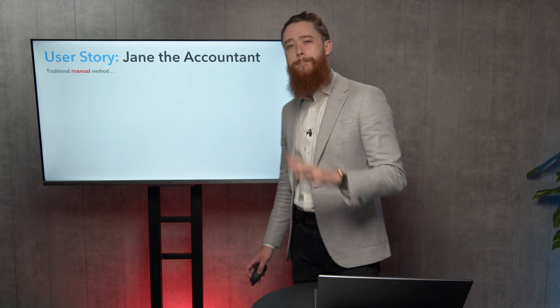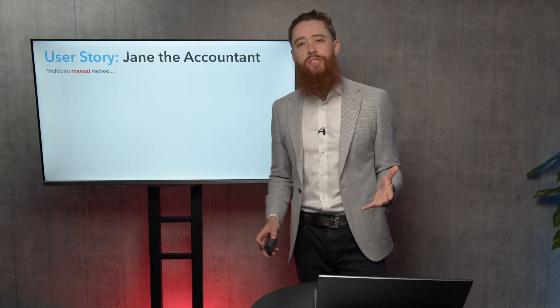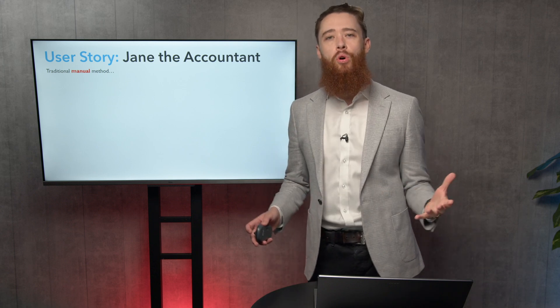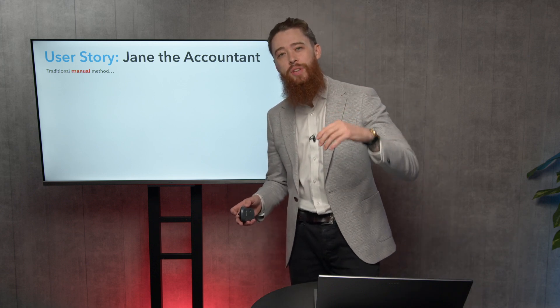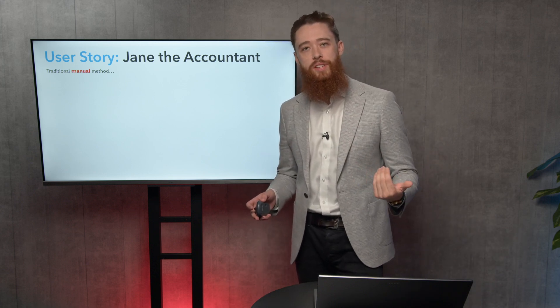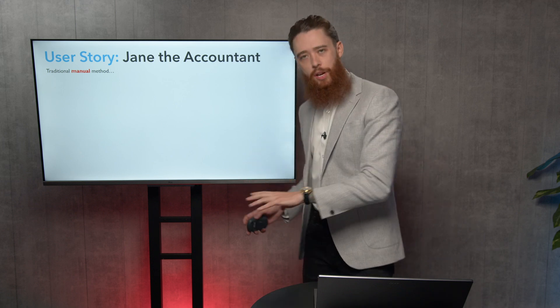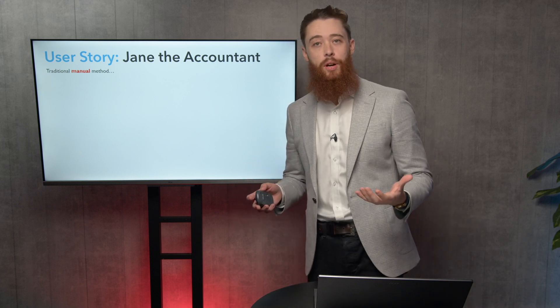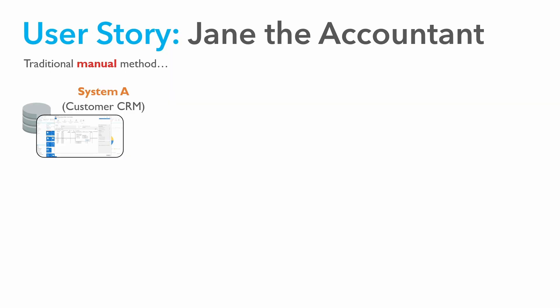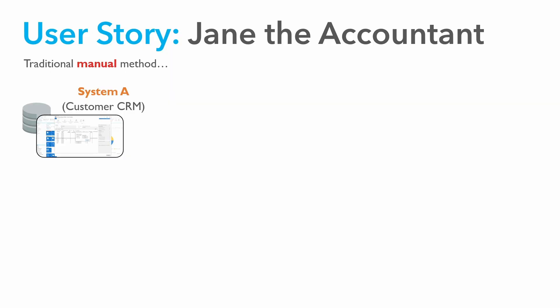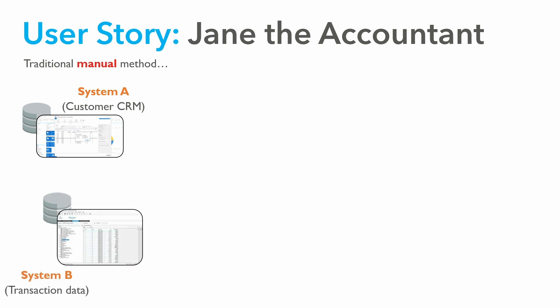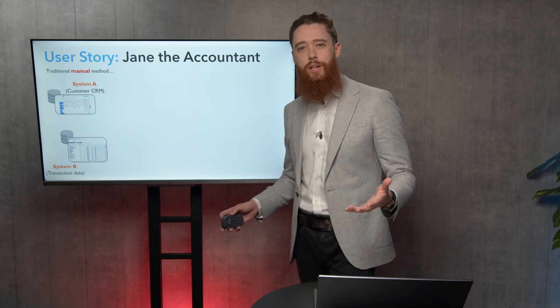So this is the traditional manual method. We're going to be building a report that highlights the sales our customers are making from the previous month to the current month — we need to compare the two. We've got System A, the customer CRM system — this might be your Salesforce instance. And Jane has System B as well, a transactional database. So you've got two separate systems going on here.